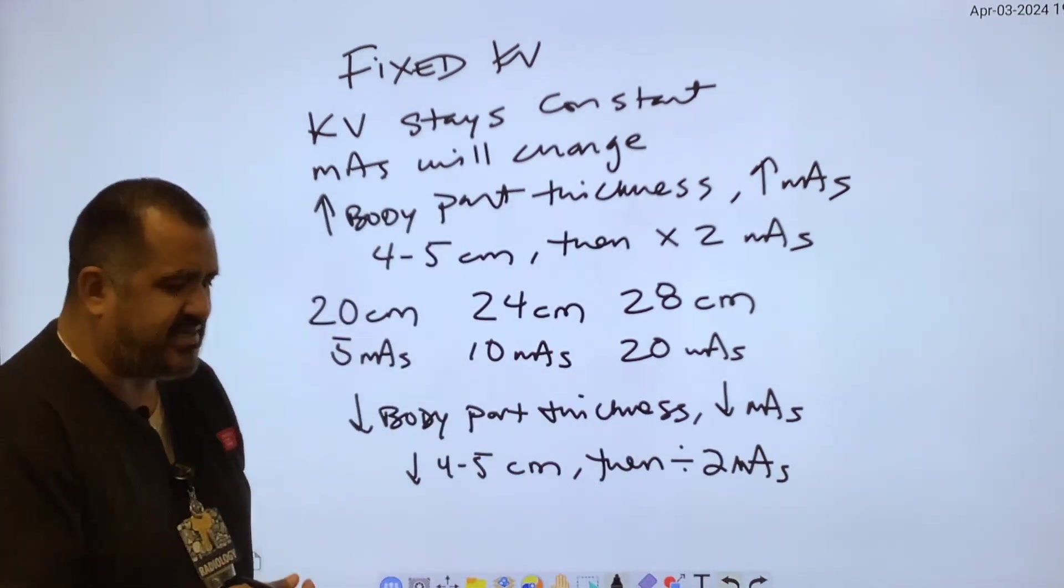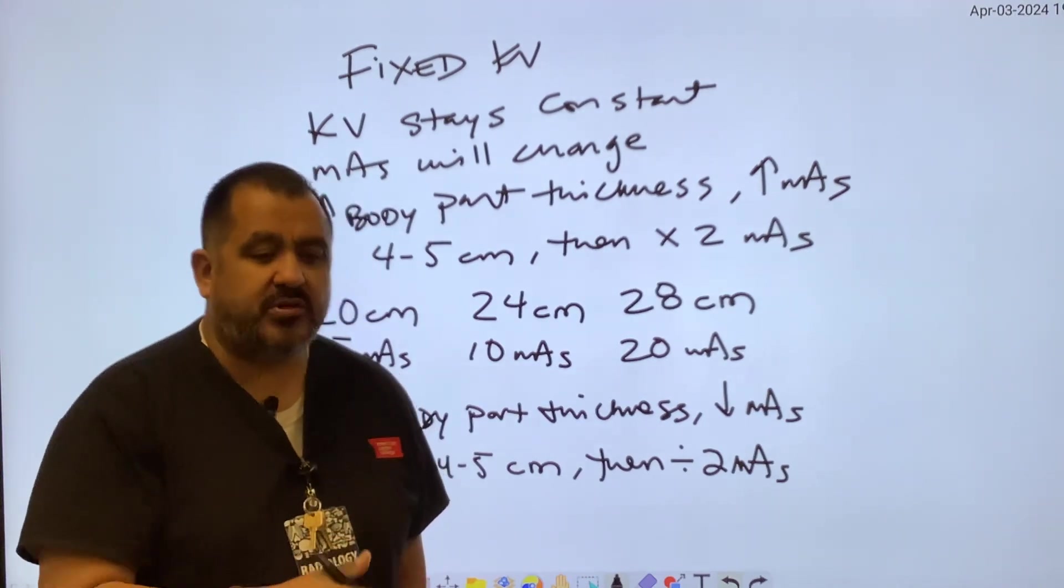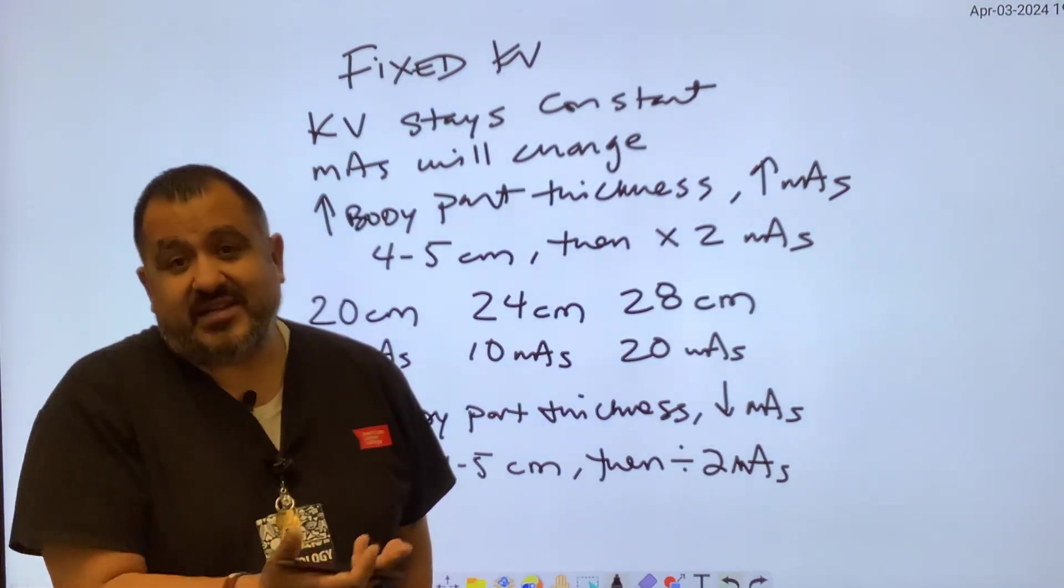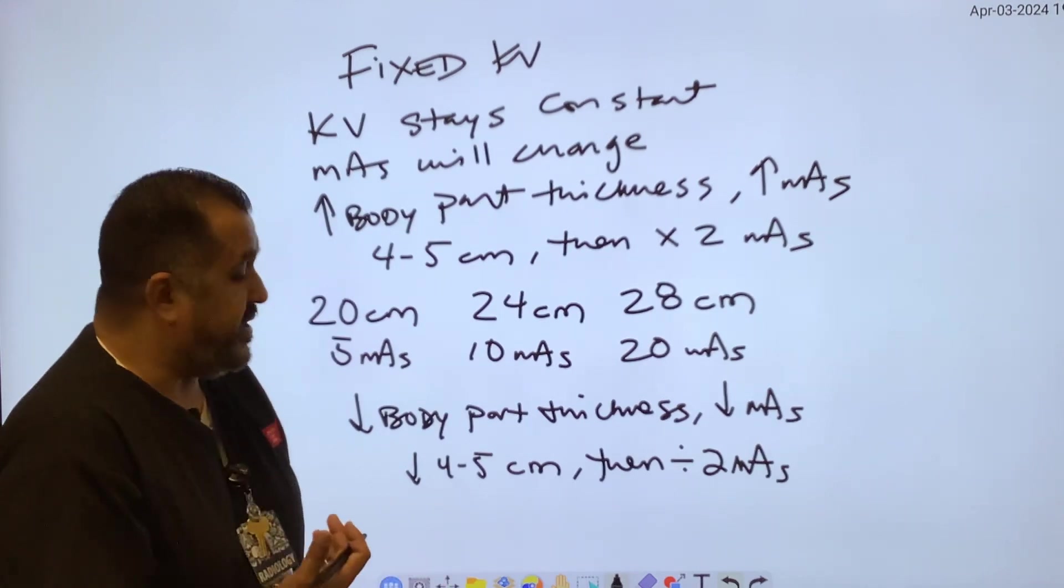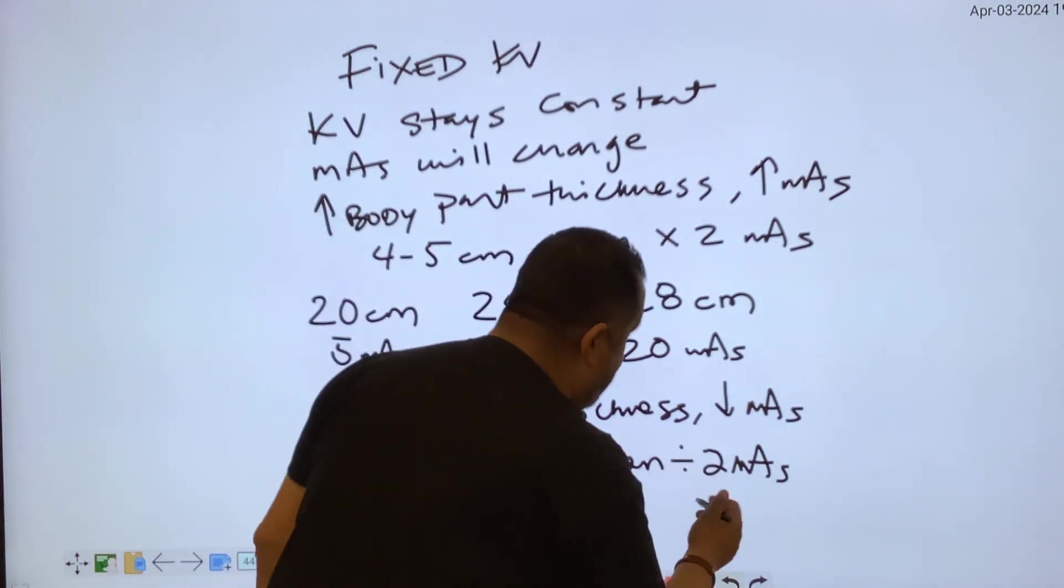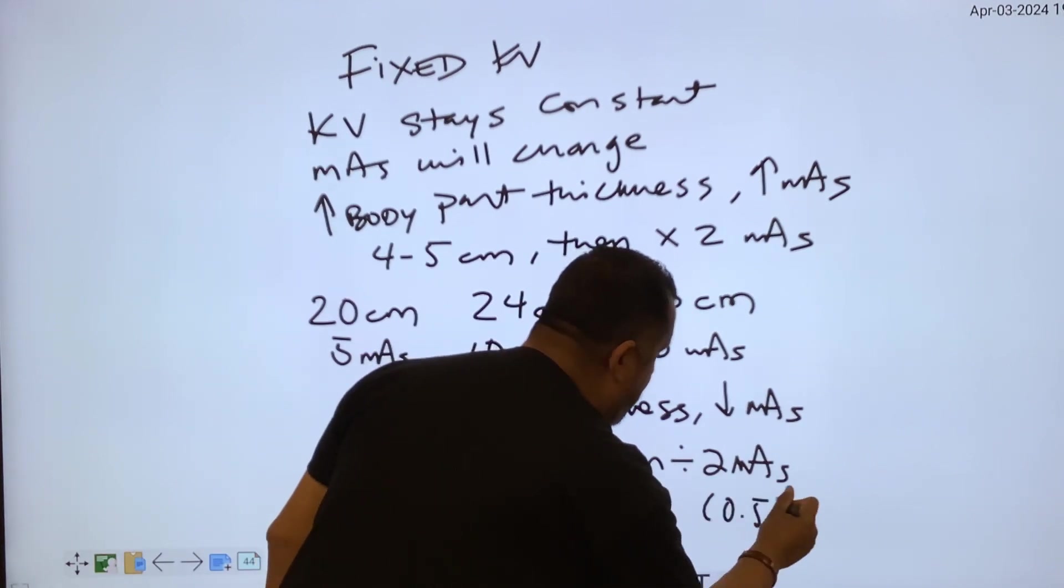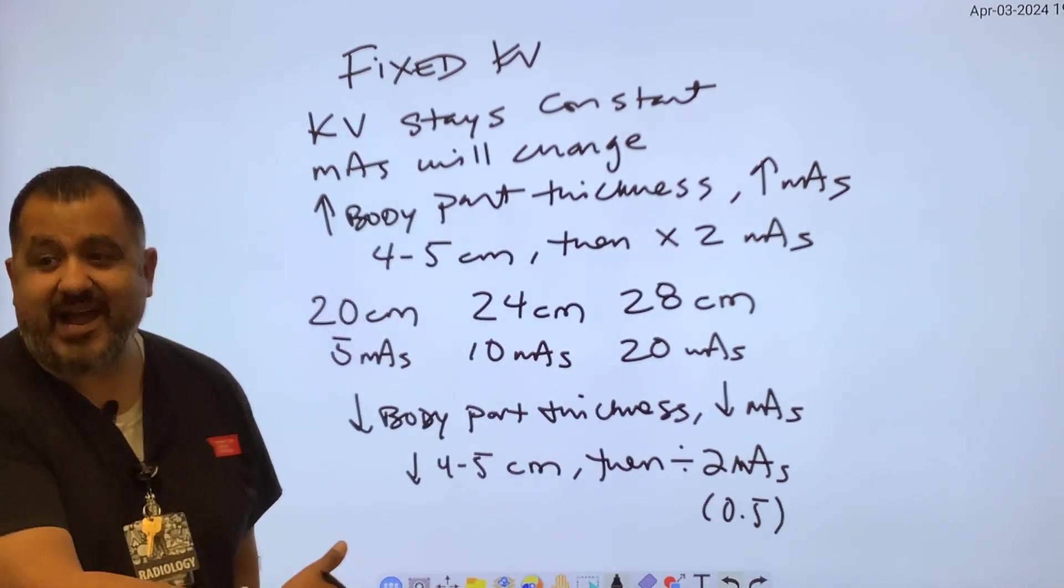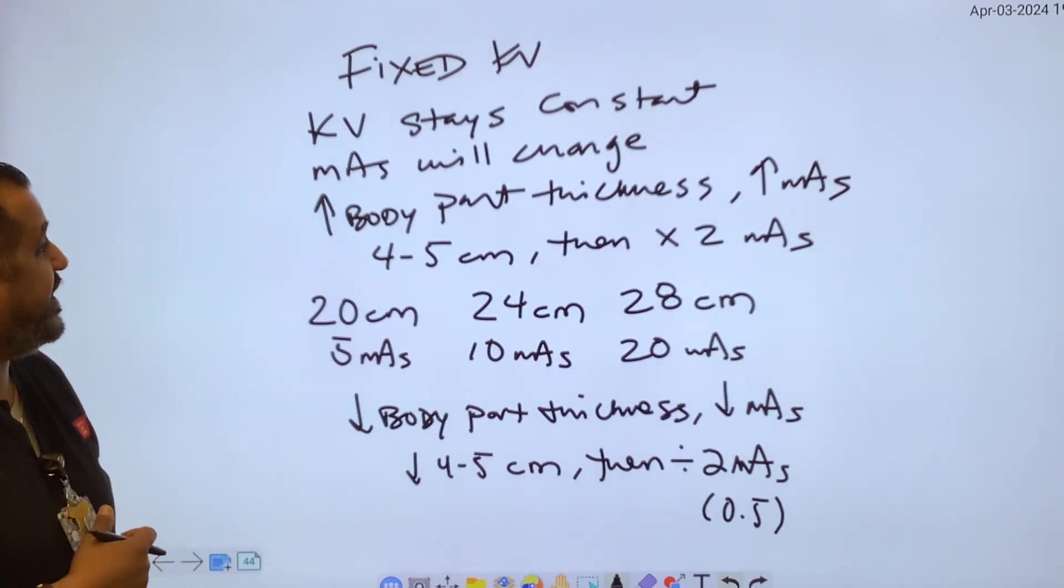Now I get some students to say, Mr. M, dividing by two, can you just multiply it by 0.5? And that's correct, you can also do that. Whichever is easier for you to understand - you can divide by two or multiply it by 0.5. You're still going to get half of your mAs when you do that.